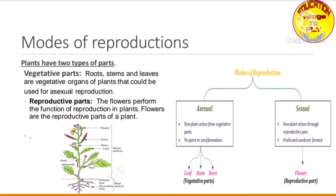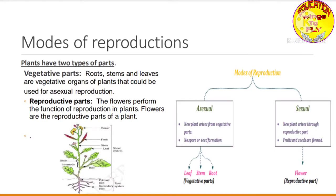Before understanding asexual reproduction, we need to know the parts of a plant. Plants have two types of parts: the first is the vegetative part and the second is the reproductive part. The vegetative parts include roots, stems, and leaves. The reproductive part of the plant is the flower. So in sexual reproduction, the flower is involved, while in asexual reproduction, roots, stems, and leaves are involved.